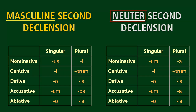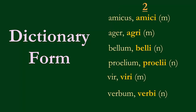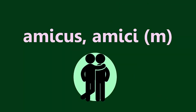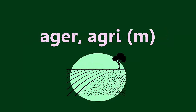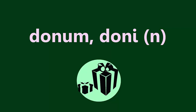Just as with first declension nouns, when you are writing the words in dictionary form, you must include the nominative, the genitive, and the gender. You can tell if a noun is masculine if the nominative ends in -us or -r, like amicus, amici, masculine, or ager, agri, masculine. If a noun ends in -um in the nominative, then the noun is neuter, like bellum, belli, neuter, or donum, doni, neuter.